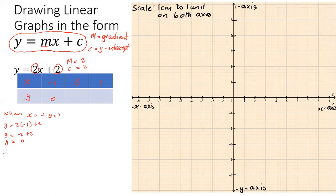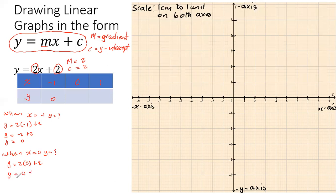Now for the next point: when x equals zero, we use the same equation — y = 2 × 0 + 2. Two times zero is zero, and zero plus two is just two. So when x = 0, the corresponding y value is two.